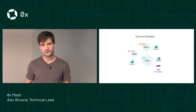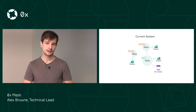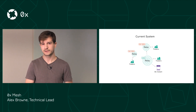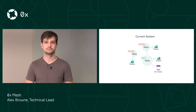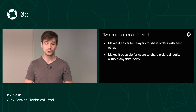What this leads to is a disjointed network for liquidity. Not all the relayers have implemented the SRA, and even for those that have, not all of them are sharing orders with one another. This is one of the use cases that Mesh is designed for, and one of the problems that it can solve.